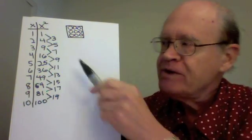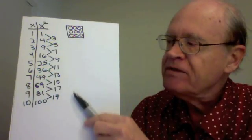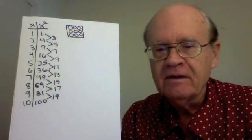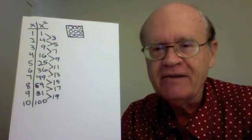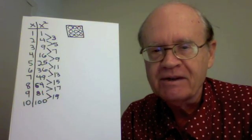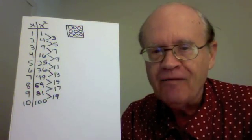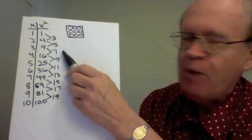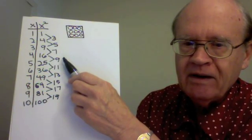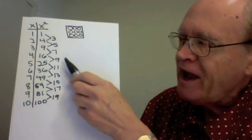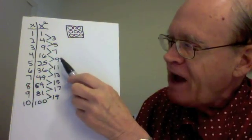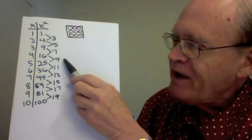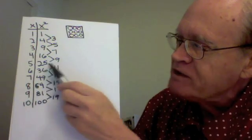How would you describe in words these differences? They are consecutive odd numbers starting with three. How far apart are they? They are two apart in each case. But now can you notice not only do these differences relate to the X squared column, but they relate to the X column also.